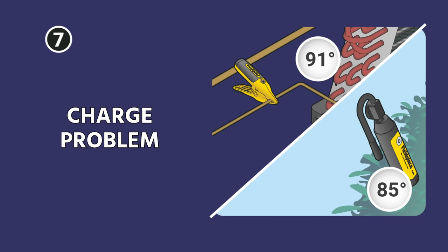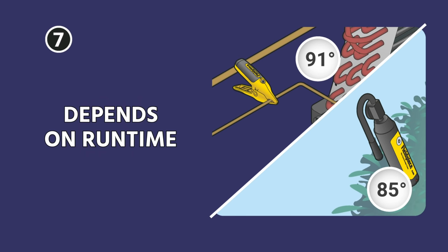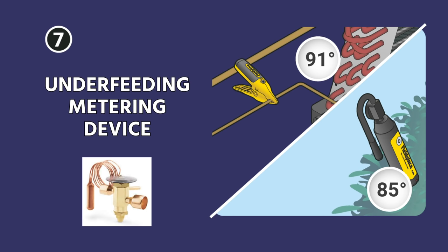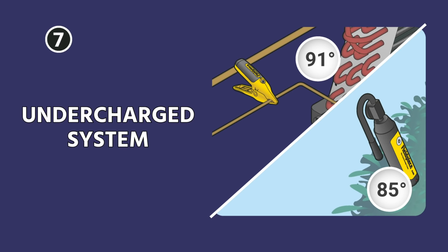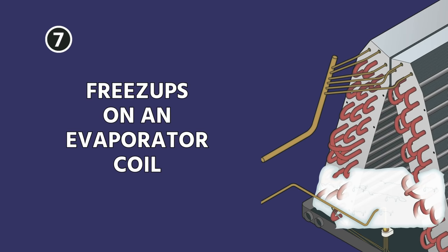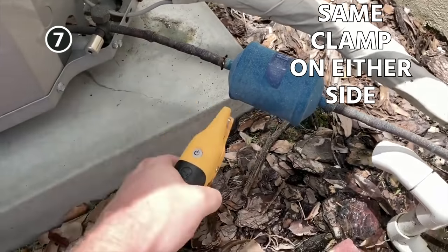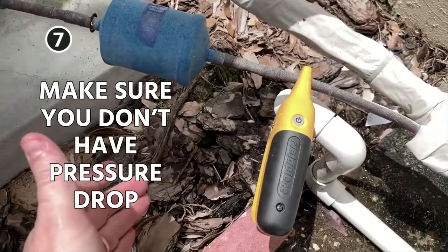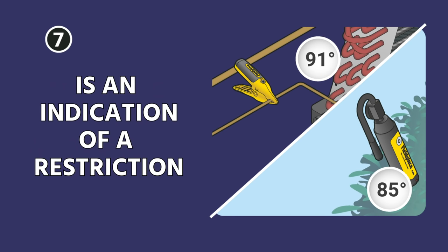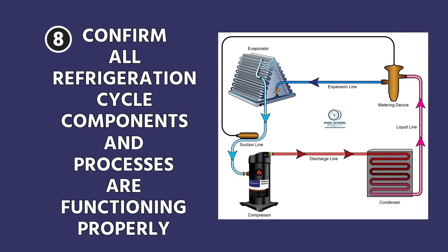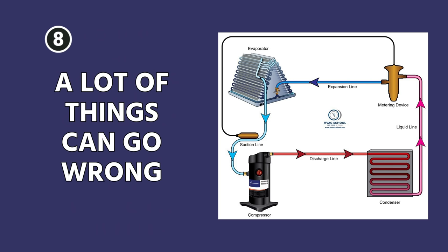A lot of folks will say that a charge problem or a restriction in the liquid line won't cause freezing. It really does depend on runtime, the market you're in, and how much moisture is in the air. But there are certainly cases where restrictions — whether it's an underfeeding metering device, a restricted liquid line dryer, or a system that's just plain undercharged — can cause freeze-ups on an evaporator coil. In terms of liquid line filter dryers, use the same clamp on either side and make sure you do not have a temperature drop across it. Anything measurable over one degree is an indication of a restriction in most applications.